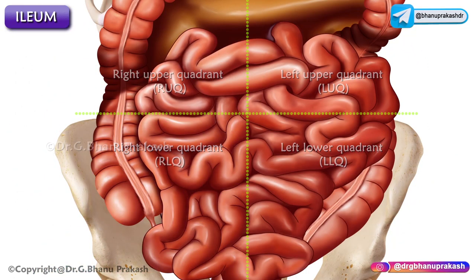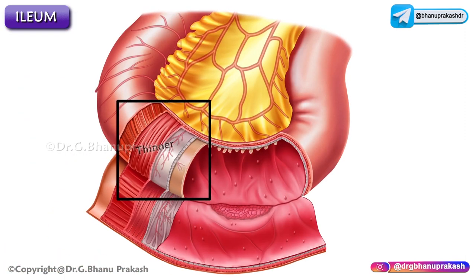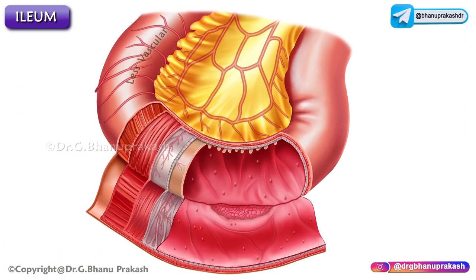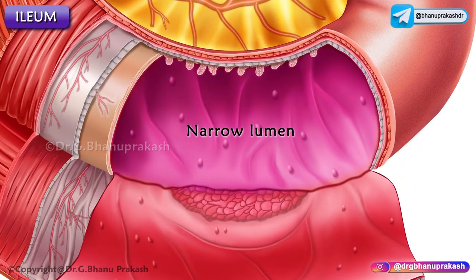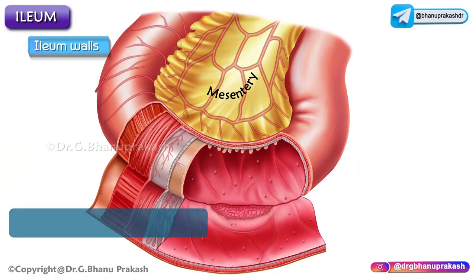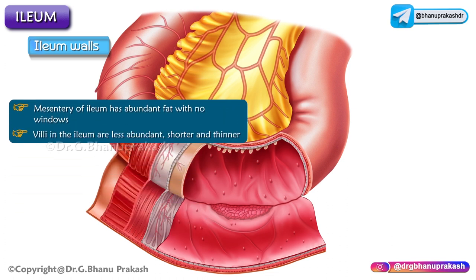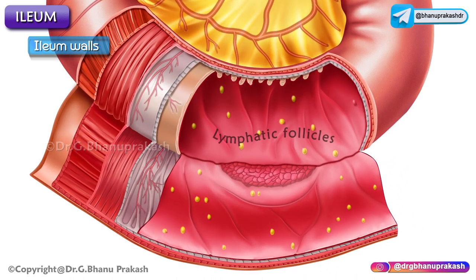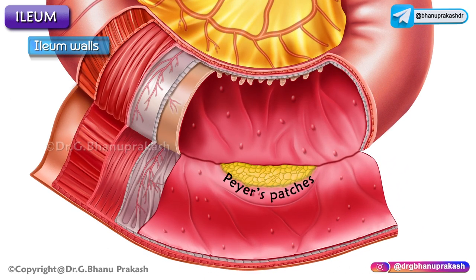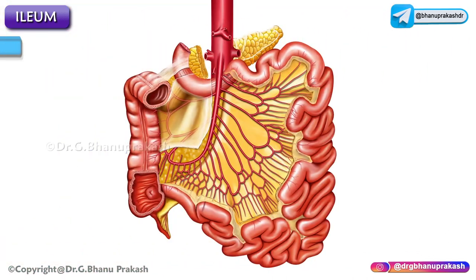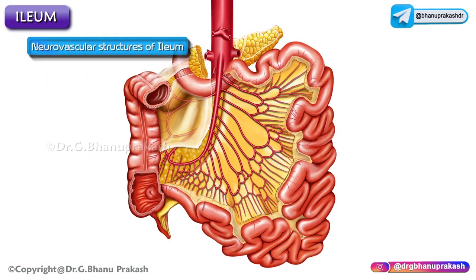As you can see in this picture, the walls of the Ilium are thinner and less vascular with a narrow lumen, and the mesentery has abundant fat with no windows. The villi of the Ilium are less abundant, shorter, and thinner, and the Ilium has numerous solitary lymphatic follicles and Peyer's patches.